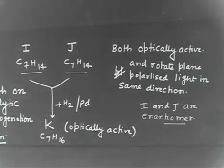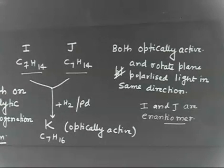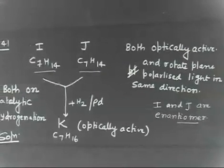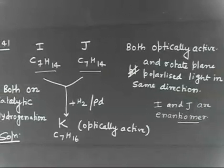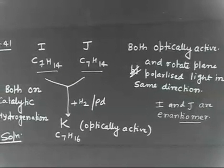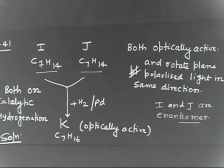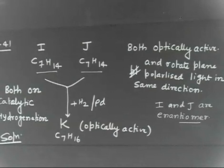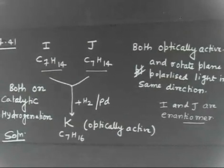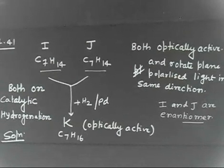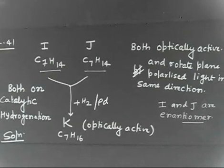So what is the structure of I and J? Catalytic hydrogenation suggests both must have a double bond. Here is a hint: first find out the unsaturation factor, and then find a compound that is optically active and also contains a double bond. You will get the answer.